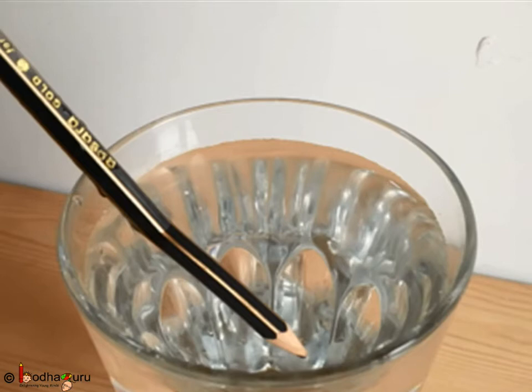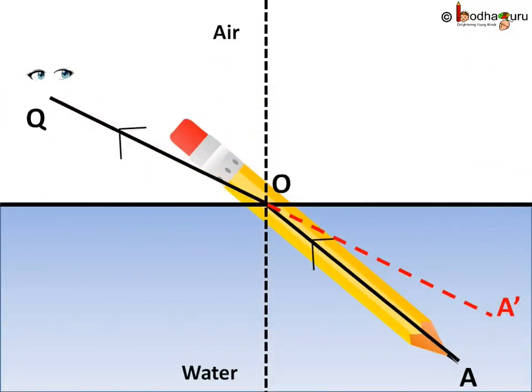This phenomena of bending of light when entering a different medium is called refraction of light. Let us understand it in detail and try to draw the concept using lines.